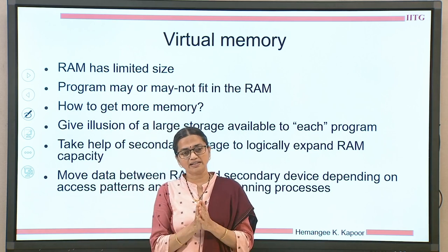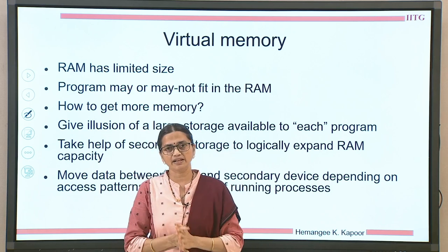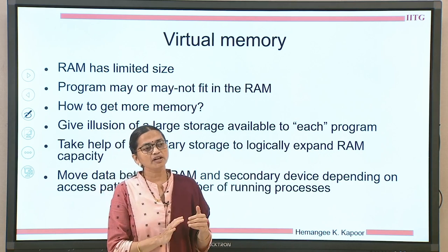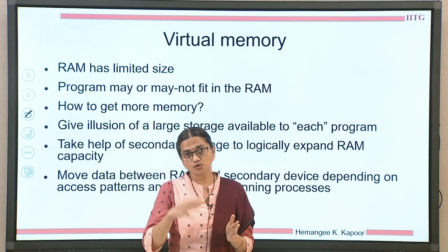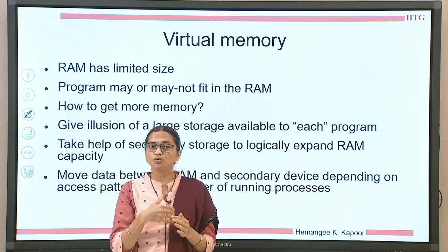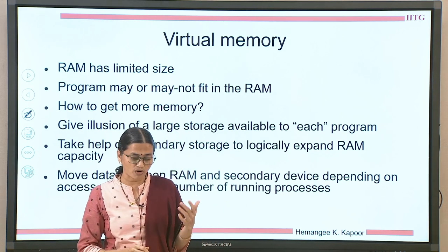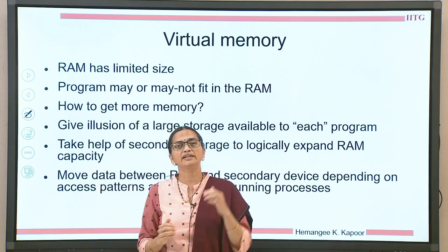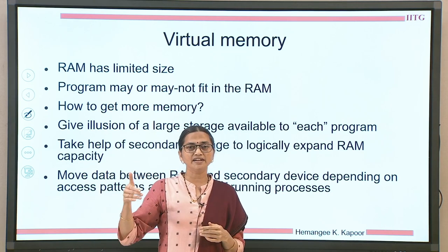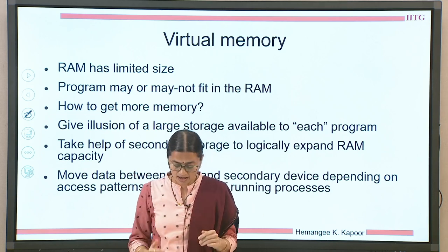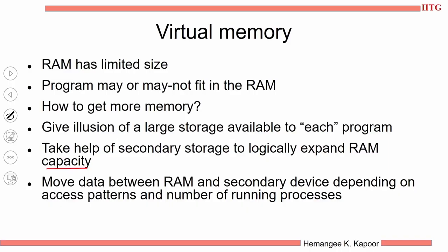If your physical memory size is limited, the process which can run using this physical memory also has its own limitations because it cannot fit all the instructions or data — essentially the complete process state cannot be saved in the given RAM capacity. Similar to going to other libraries, we go elsewhere to access storage. This is done using the secondary memory or disk, which helps us logically expand the RAM. RAM is small, but we use the secondary disk space to access those locations, essentially expanding RAM capacity.